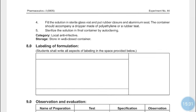Fill the solution into sterile glass vials, put the rubber closure and aluminum seal. The container should be accompanied by a dropper made of polyethylene or a rubber teat. Sterilize the final sealed container by autoclaving at 121°C at 15 lbs pressure for 30 minutes.